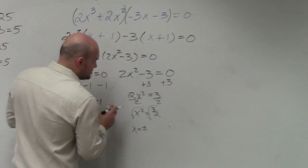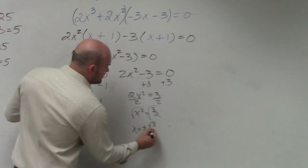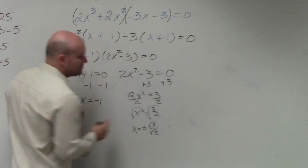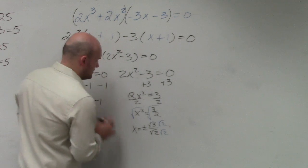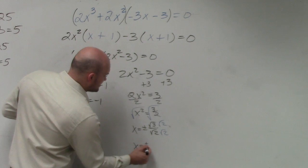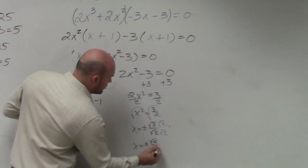I can't take the square root of 3 halves, so I'm going to separate it into the square root of 3 divided by the square root of 2. Therefore I can rationalize my denominator, so x equals plus or minus the square root of 6 over 2.